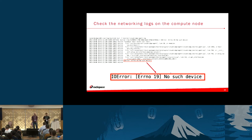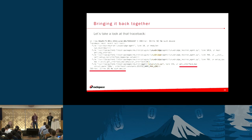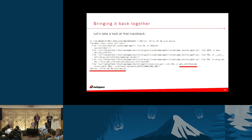As Linux administrators, 'no such device' isn't that uncommon to see, but the problem is we don't know what device it is — it could be any type: block devices, network devices, you name it. So what is the device? Wade and I are operators — we dabble in Python but we're not Neutron developers. We go back to that traceback showing the 'no such device' error, and looking at the traceback we see a function called 'get_interface_mac' from the utils.py file, which seems pretty self-explanatory — it's trying to get the MAC address of an interface.